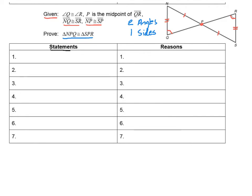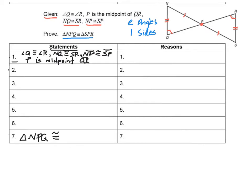Let's start with our statements. Statement number one is going to be all of the given information — I've squeezed all of it into that first statement. The next thing I want to fill in is my last statement. They gave me spaces going all the way from one to seven, so I'll write the goal down in seven just so I know where I'm headed. My plan is to end up there — to show that the two triangles are congruent. And the first reason: I know all this information because it was given to me.